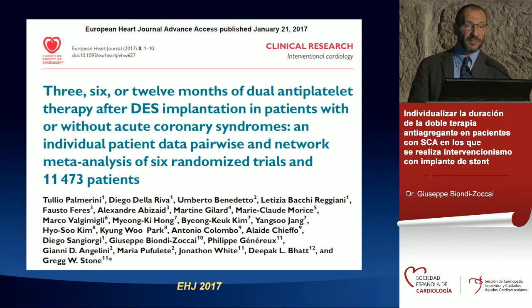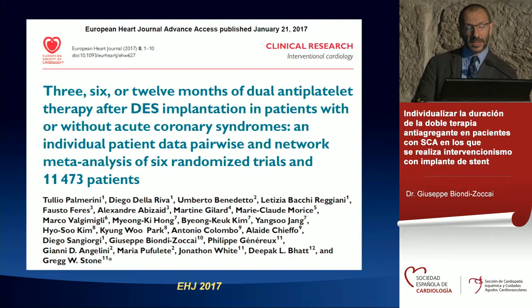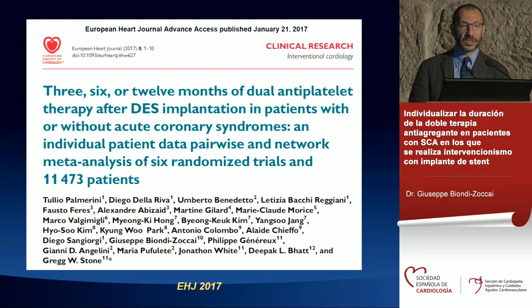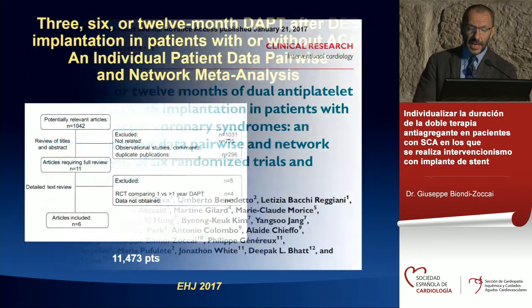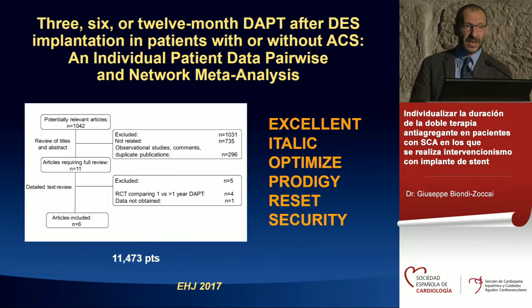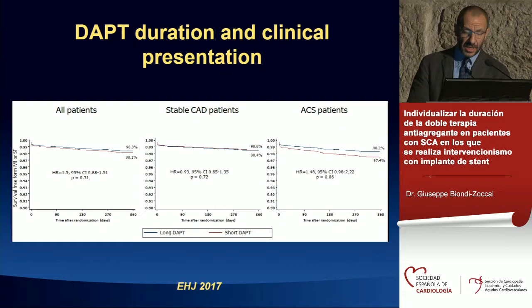Some trials provided patient-level data; others did not. The best scenario is to export and infer data from one trial to another using network meta-analysis — a technique with limitations but still meaningfully insightful. We have probably done the most network meta-analyses in the world, which is not necessarily a good thing. As you can see, prolonged DAPT was beneficial in patients with unstable coronary disease — ACS — whereas it was not as beneficial in stable patients.